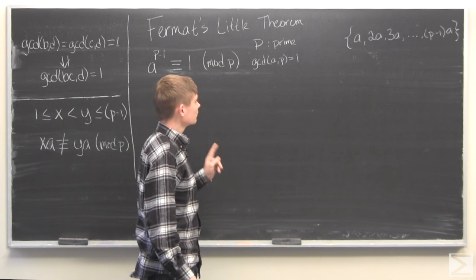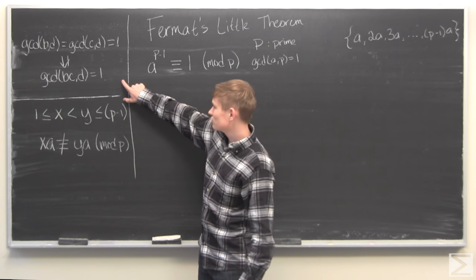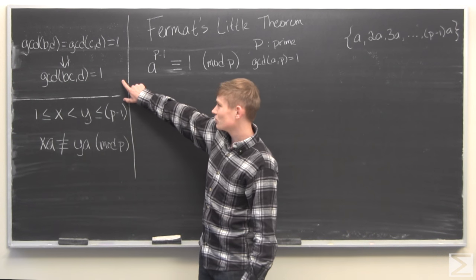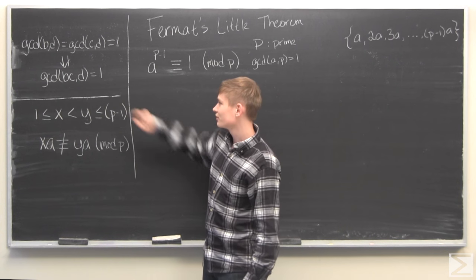To do this, we are going to use a set of numbers — the multiples of a from 1 to p minus 1 — and we are also going to use these two lemmas, which we're going to prove right now.